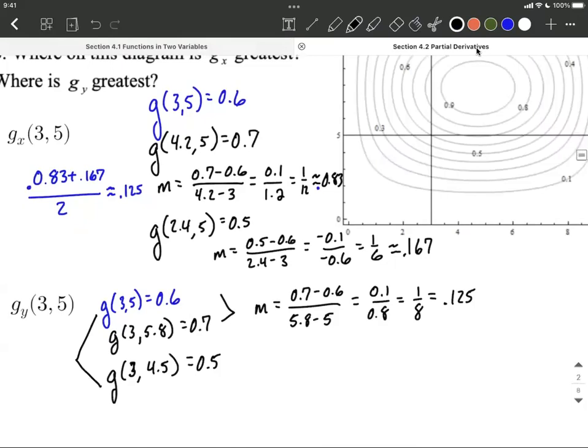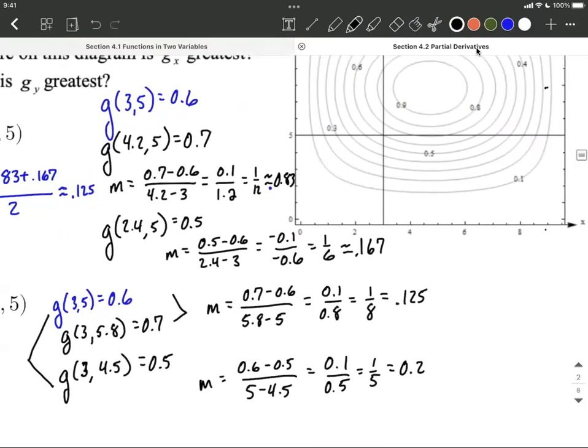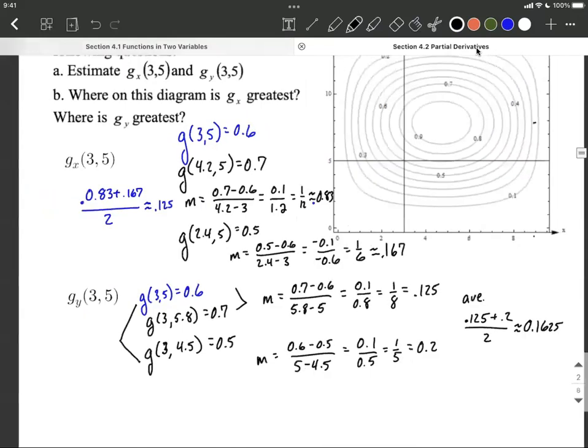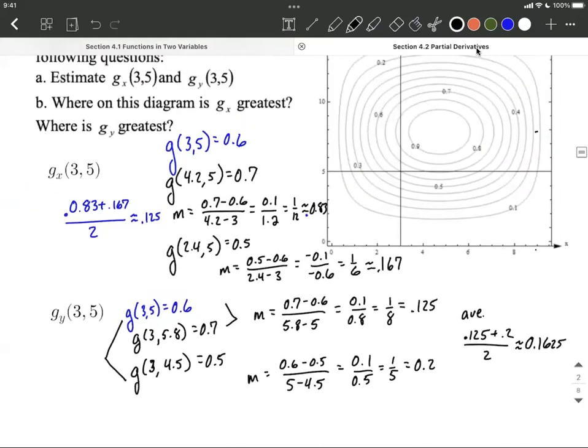If instead we went with this pair, right, moving down below instead of up, what we'd get is that slope is going to correspond with 0.6 minus 0.5 divided by 5 minus 4.5. So 0.1 divided by 0.5 is 1 fifth, or 0.2. Again, if you want to get an even better estimate between these two, we take their average, and their average would be 0.125 plus 0.2, all divided by 2, which works out to be right about 0.1625.